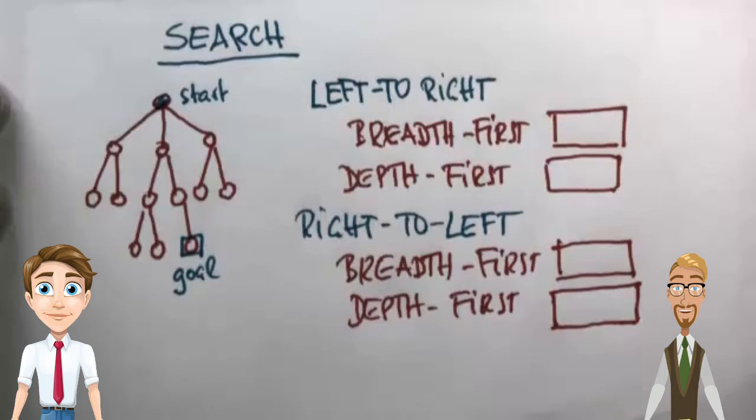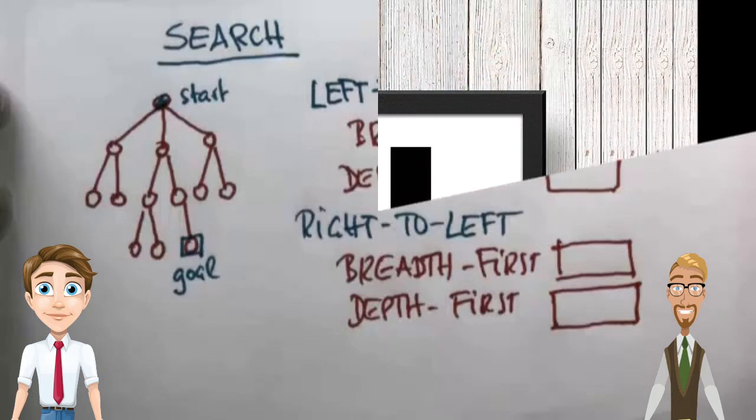The first question is, if we search from left to right, how many nodes we should explore before we find the goal using breadth first search? What if we use depth first search? The second question is, if we search from right to left, how many nodes we should explore before we find the goal using breadth first search? What if we use depth first search?